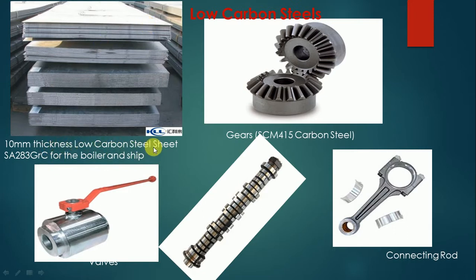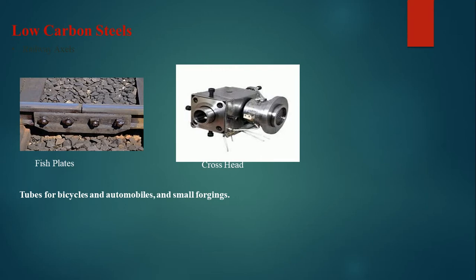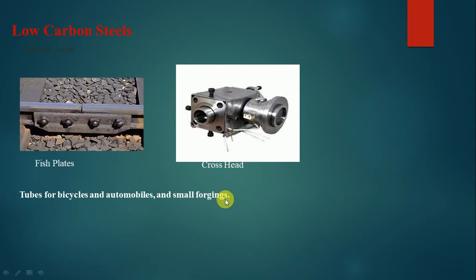Low carbon steel is used for 10mm thickness sheets for boilers and ship walls. Some low carbon steels are applied in gears, camshafts, and connecting rods. Railway axles joined by fish plates use low carbon steel content. Crossheads, bicycle tubes, automobile tubes, and small forgings are also made from low carbon steel.